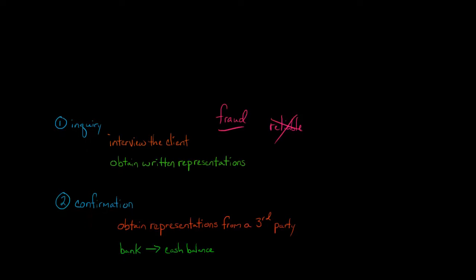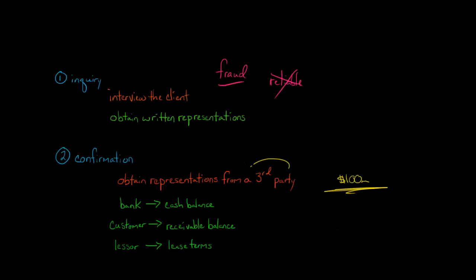A more reliable way of getting information is to confirm with a third party some of the representations that the client is making to you. For example, if the client says they have $100 million cash in their bank account, you can do a confirmation with the bank, mailing a letter and asking if the client in fact has $100 million in the bank. It's a third party, so they're going to be more honest than the client.